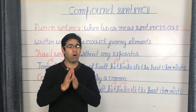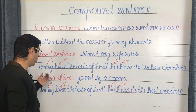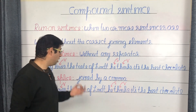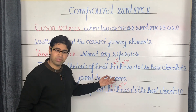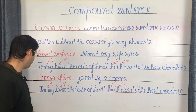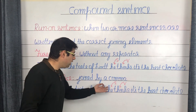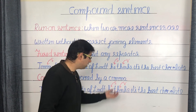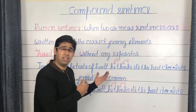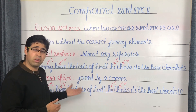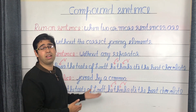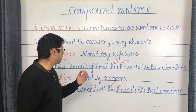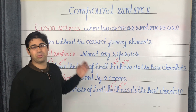The second variety of the run-on sentence is the comma splice. A comma splice occurs when two independent clauses are joined using only a comma: 'Jimmy loves the taste of lint, he thinks it's the best chocolate.' The second clause seems entirely unrelated to the first, whereas there is clearly a relation. You fix this using the same measures as with the fused sentence.